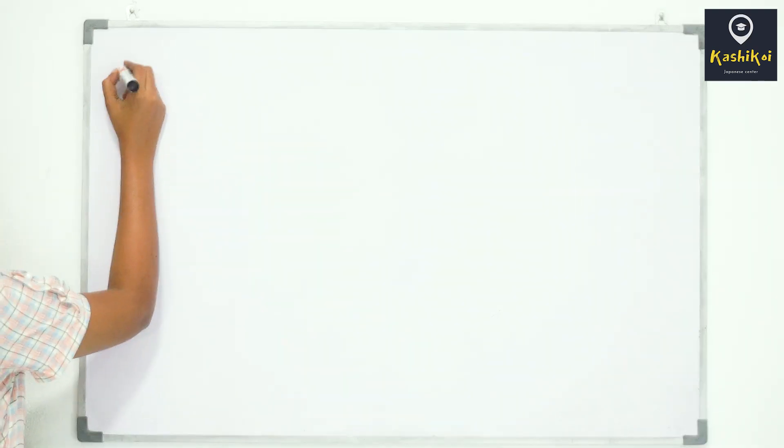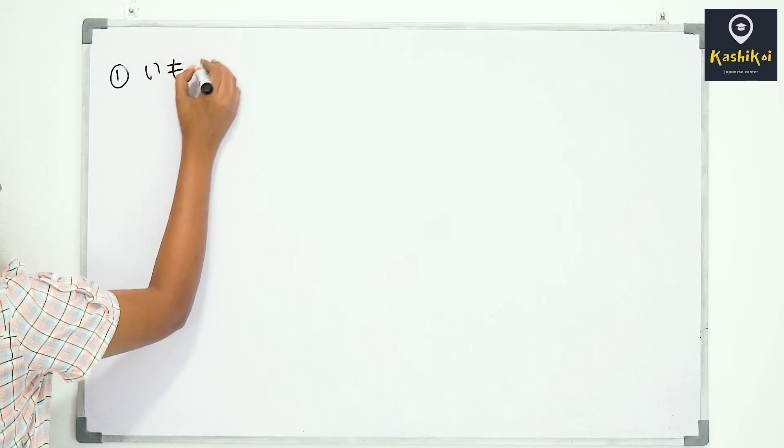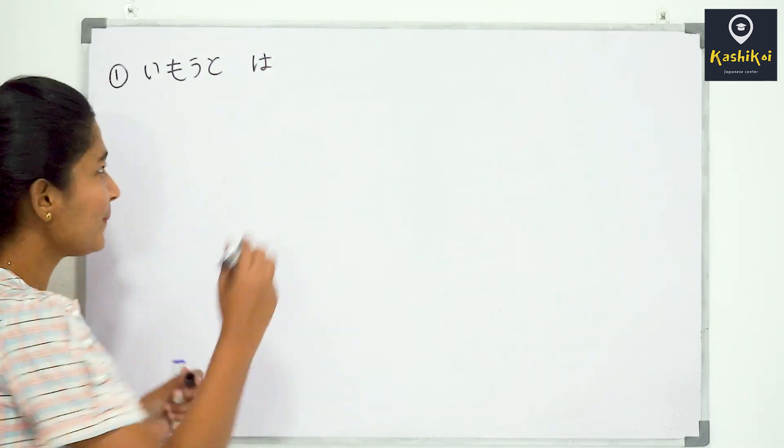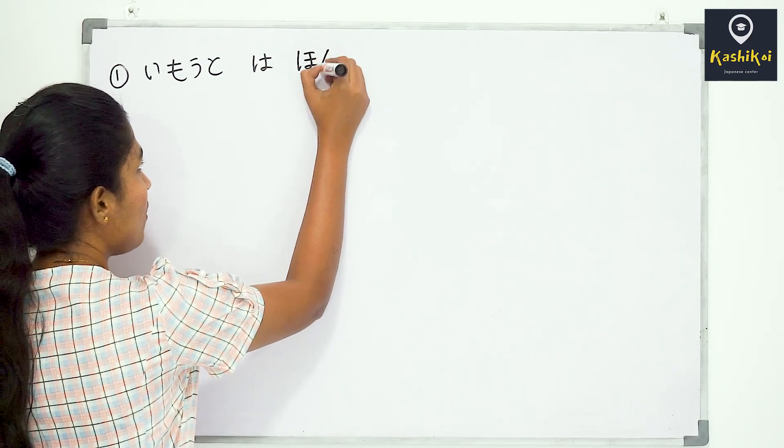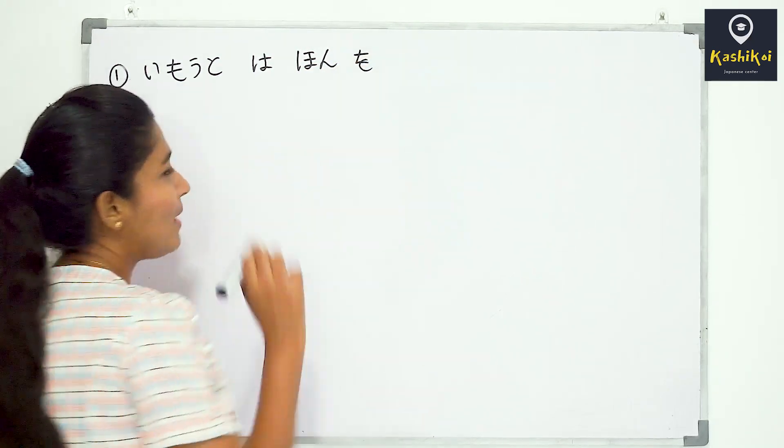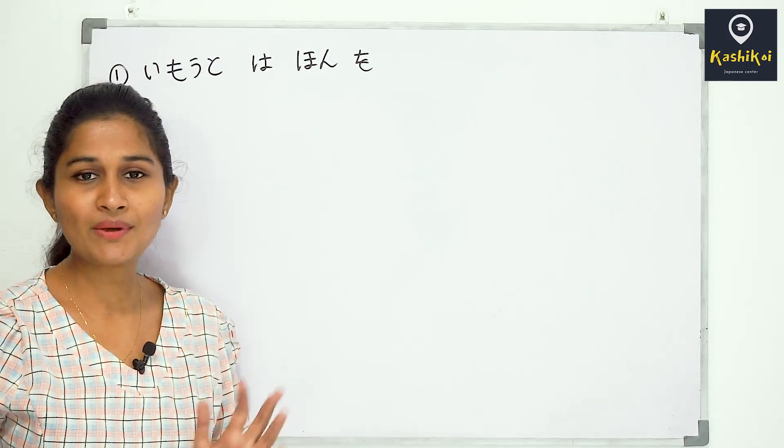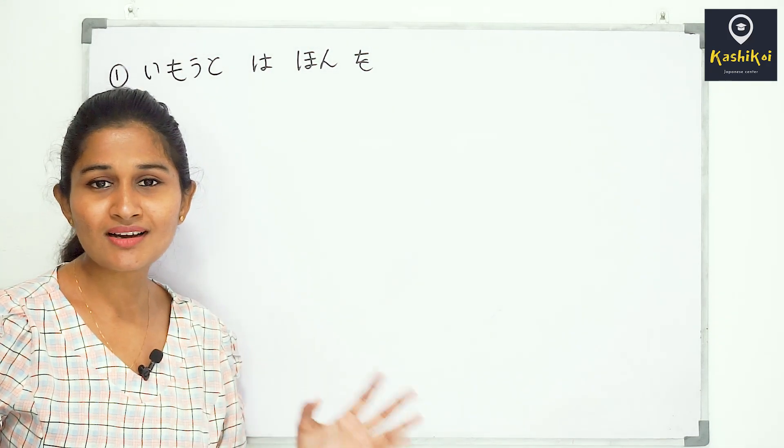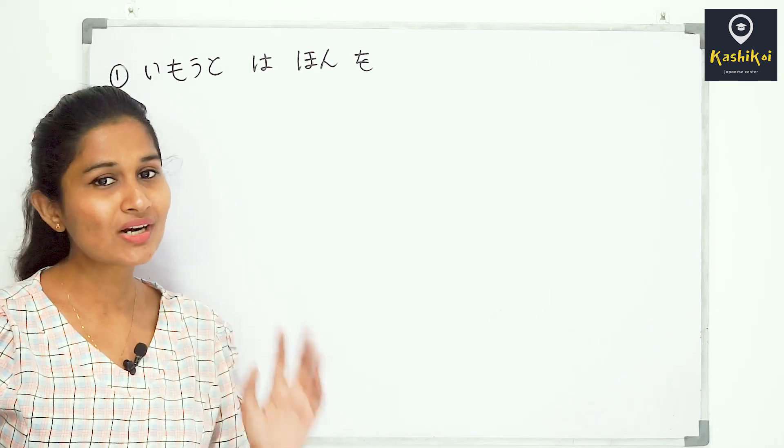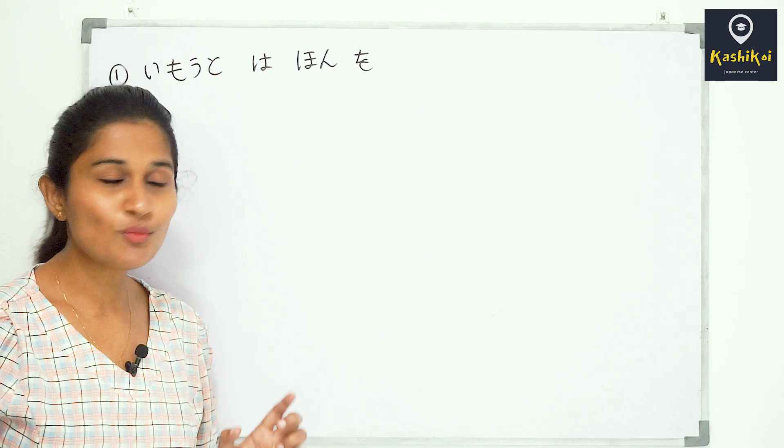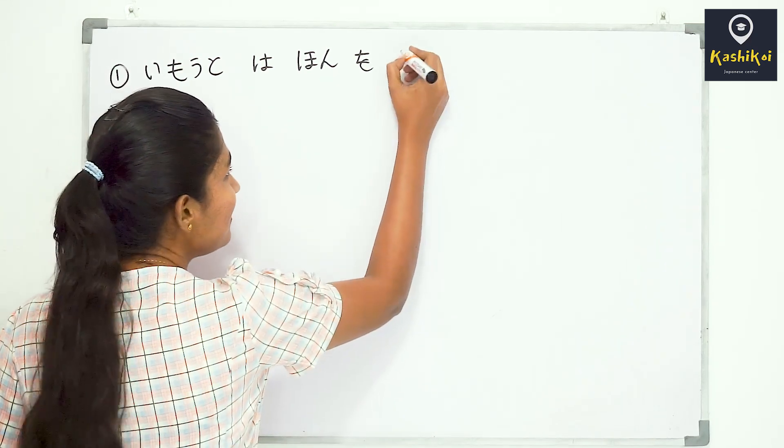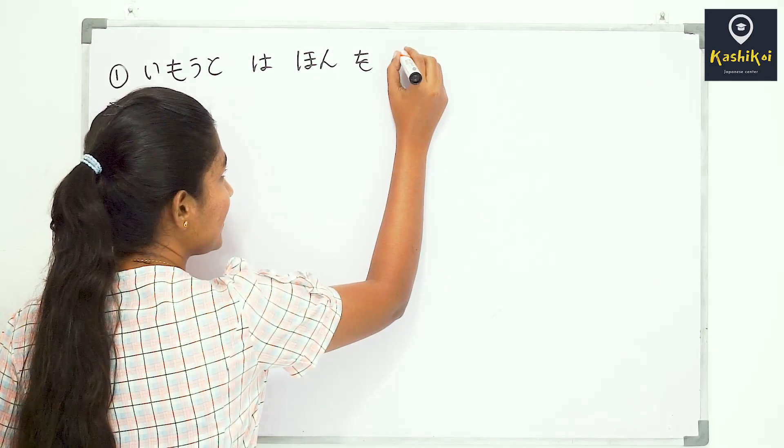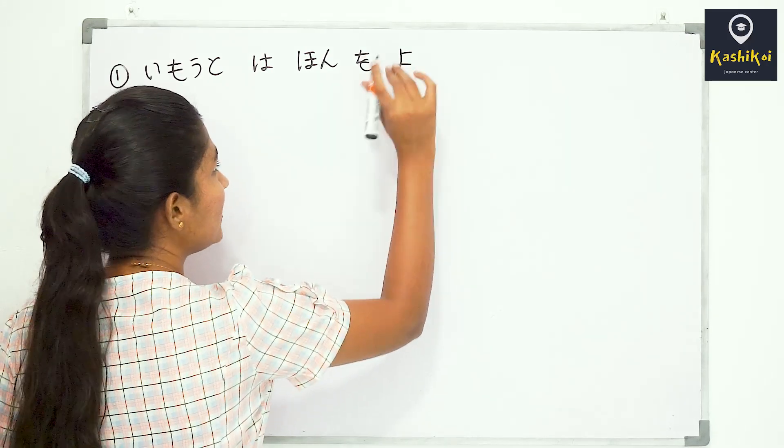Now let me explain with examples. When we talk about children learning, we use yomu which means 'to read'. Yomu becomes yomi in masu form, so the nagara pattern is yomi nagara.